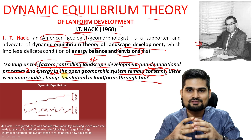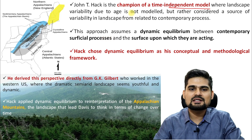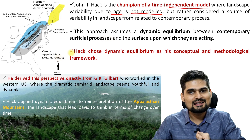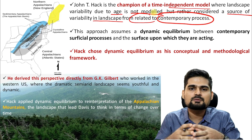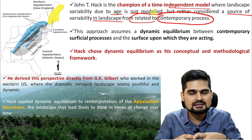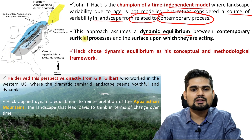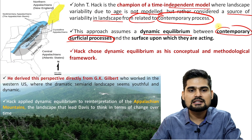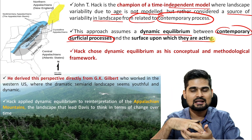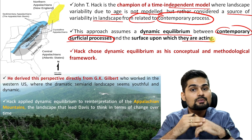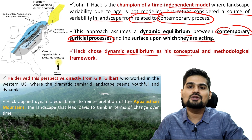This model was independent of time. J.T. Hack is a champion of a time-independent model where landscape variability due to age is not modeled. Rather, it is considered as variability in the landscape related to contemporary processes. Geological time scale and historical processes are not considered here. What is important is the current surficial processes. The approach assumes dynamic equilibrium between contemporary surficial processes and the surface upon which they are acting — meaning the process acting right now and the surface's structure and composition. Hack chose dynamic equilibrium as both his conceptual and methodological framework.